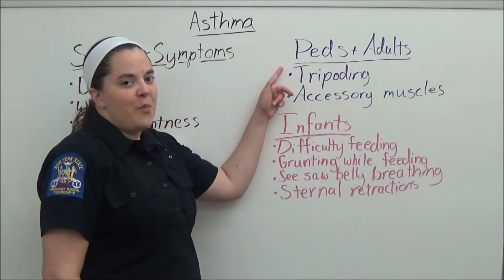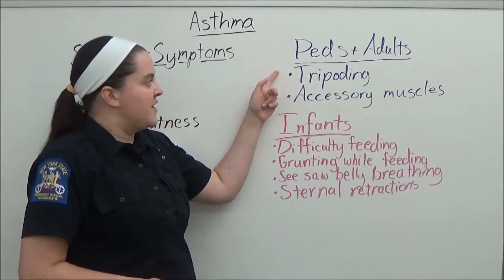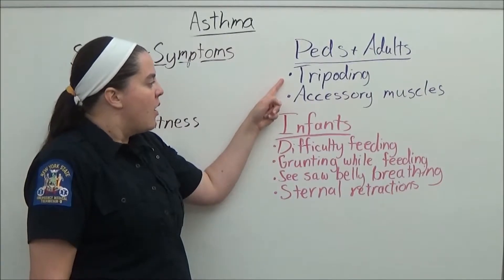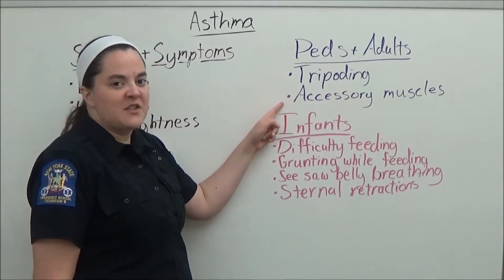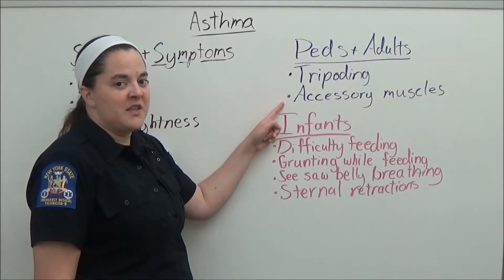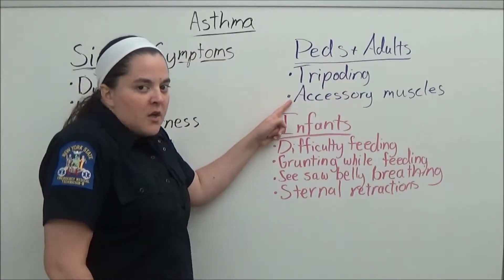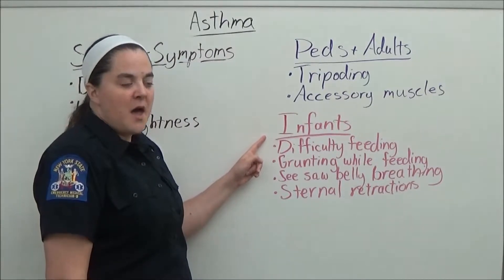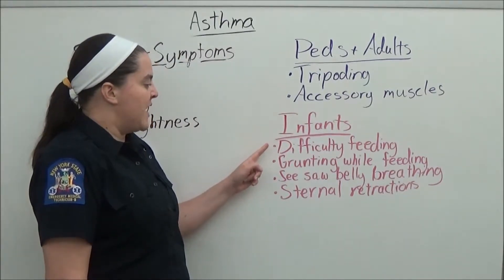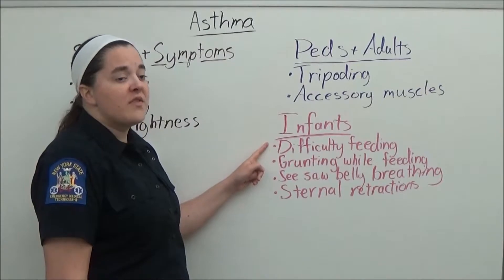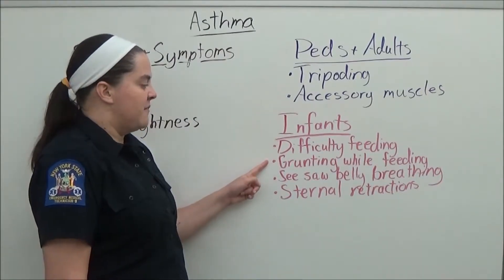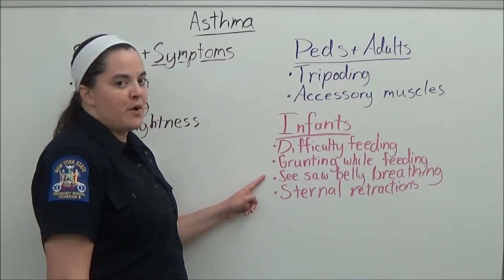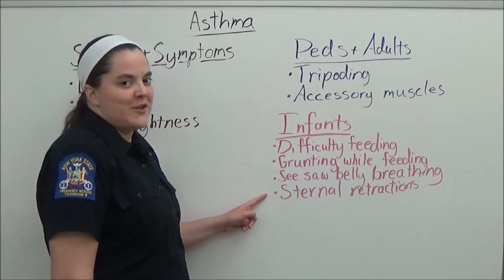In pediatric and adult patients experiencing an asthma attack, you may notice that the patient is in a tripoding position and they may also be using accessory muscles to help them breathe, such as using their shoulders. In infants, mom may report that the baby has difficulty feeding or that the baby grunts while feeding, and you may notice seesaw belly breathing or sternal retractions.